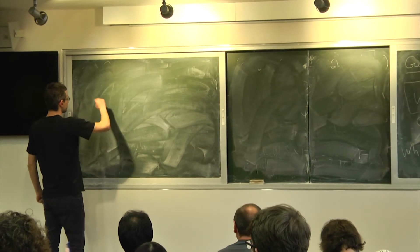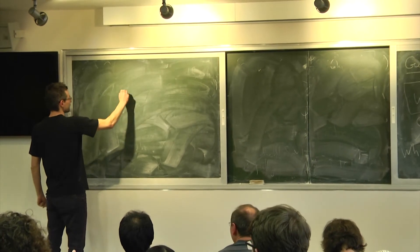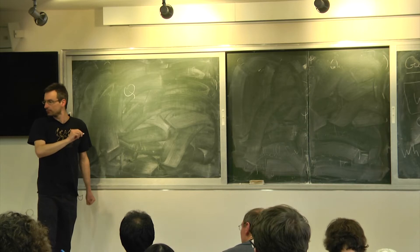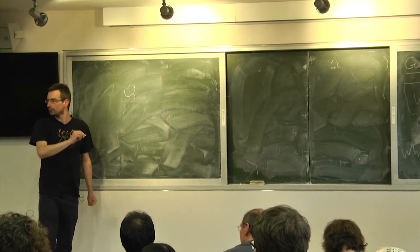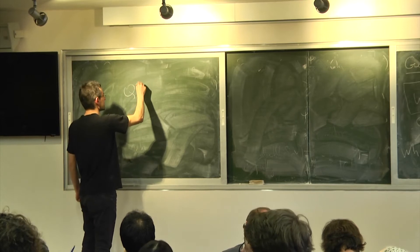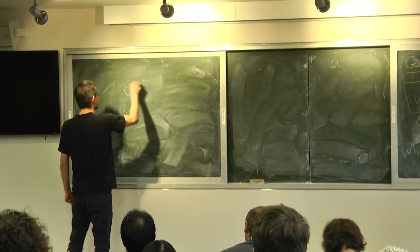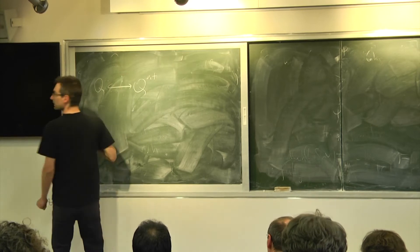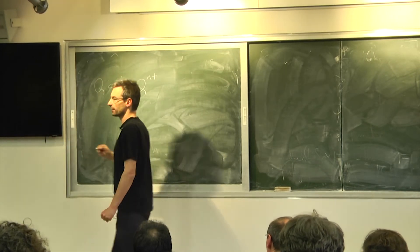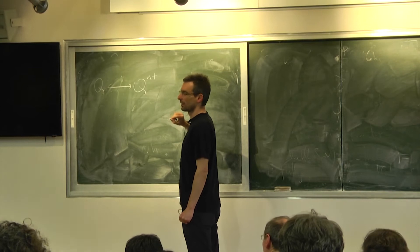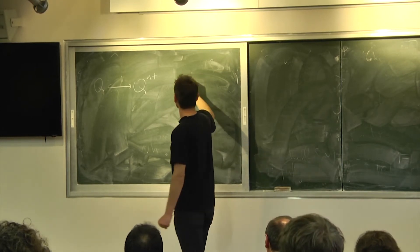Sorry, I'm not following the notation so well. So there is the stack Q. Q extended and Q. J. Lo over shriek. How did you define the closed stratum? Oh yeah, okay, it's this.